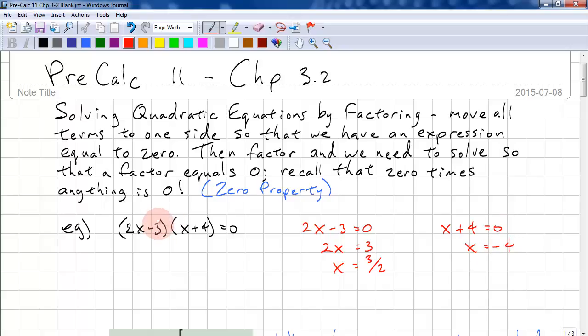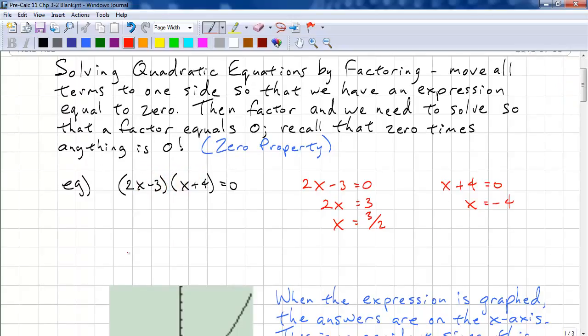So, how we get the answer is, if we set this equal to zero, then our answer is zero, because zero times anything is zero. Again, if we set this equal to zero, anything times zero is zero. And just be careful how you answer the question. So, x equals 3 over 2, or x equals negative 4.